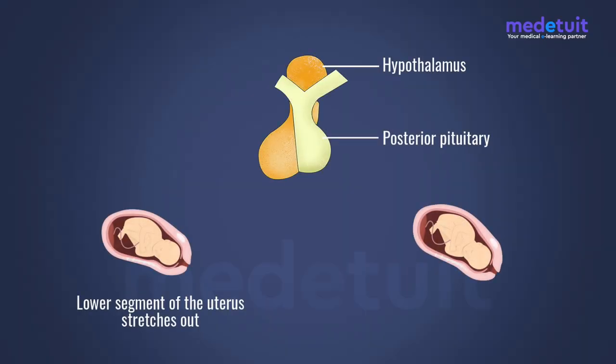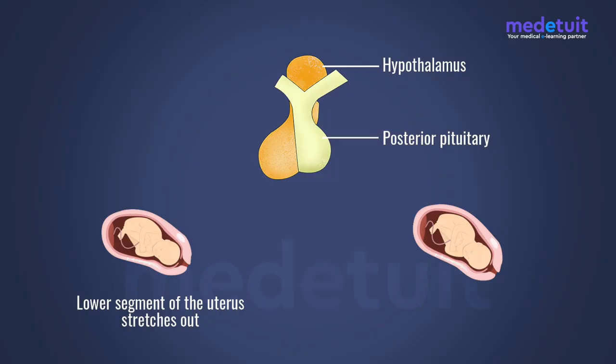As seen in the frame, there is the gravid uterus with the baby inside, about to be delivered. Immediately before the parturition act, the baby descends down due to contraction of the uterus from above. As shown in the animation, the baby descends and the lower segment of the uterus distends to accommodate the descending baby. The distended lower segment of the uterus sends a neuronal signal back to the hypothalamus, the center for secretion of the hormone oxytocin, which is released in response to the stretch of the lower uterine segment.